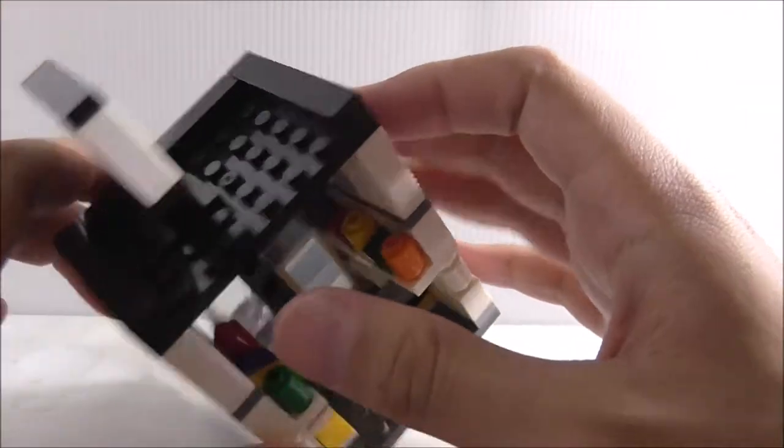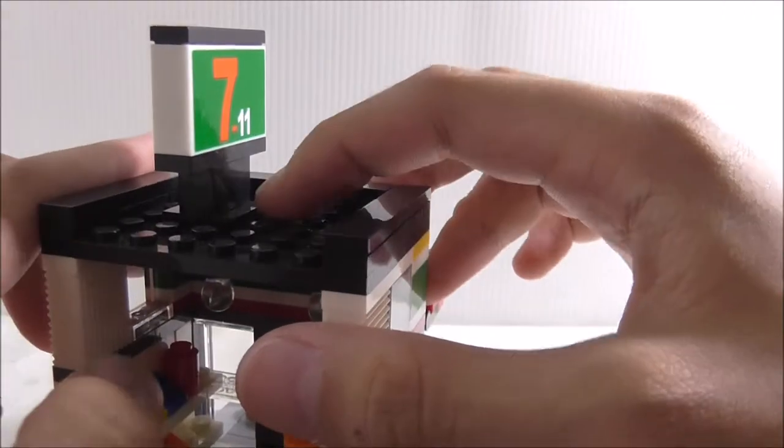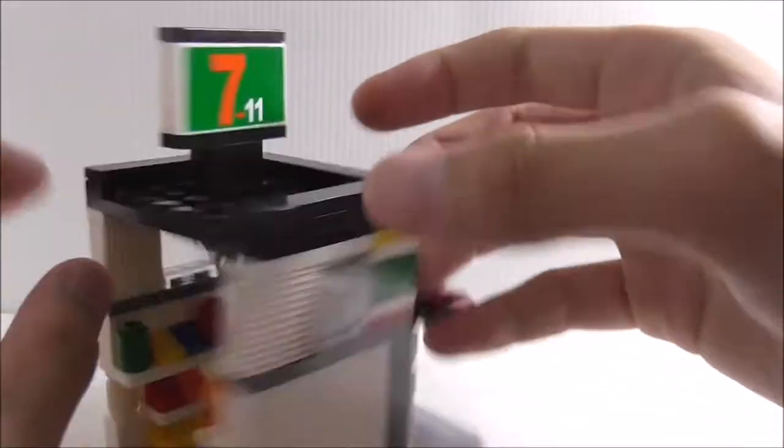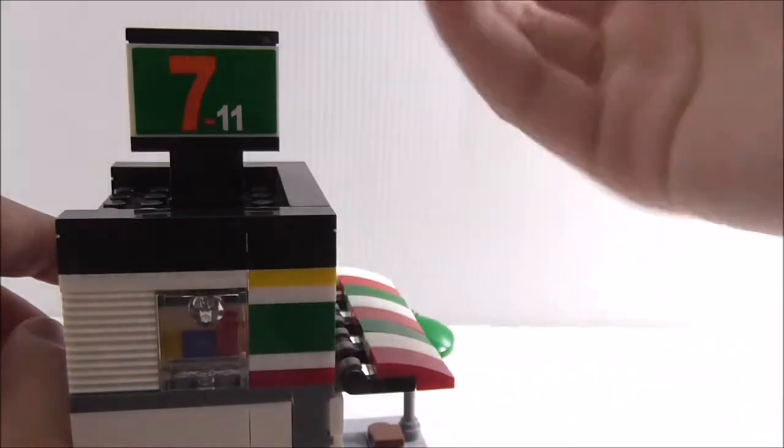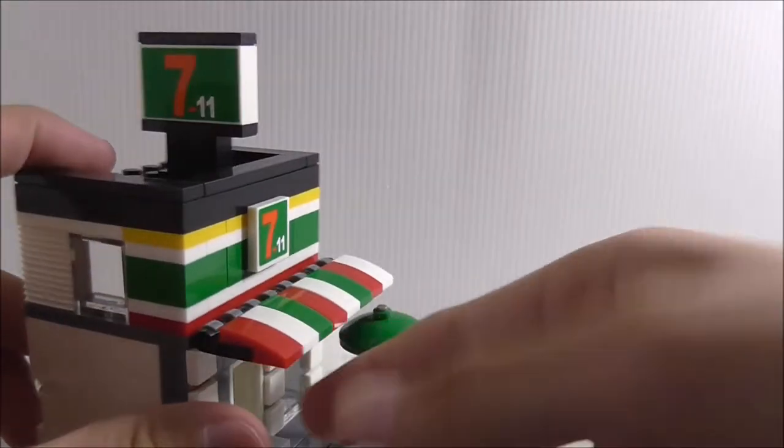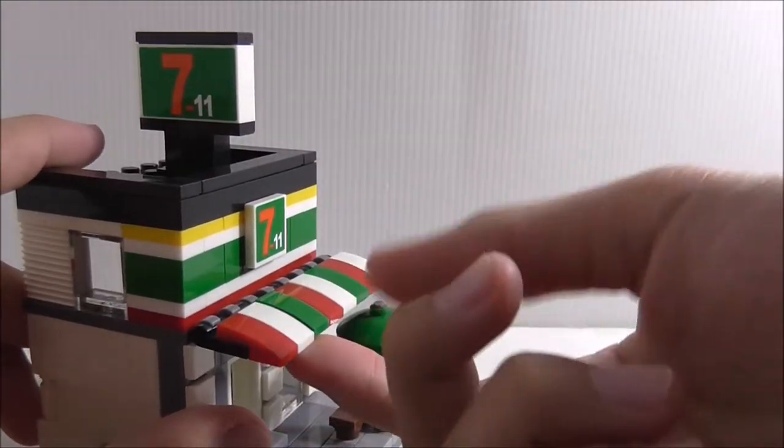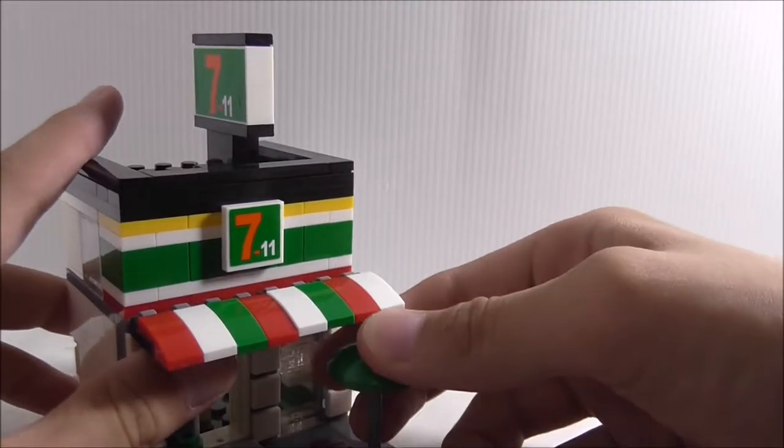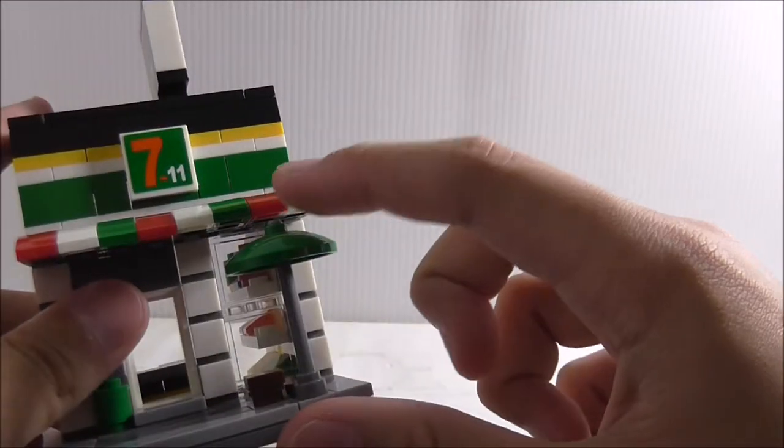On top here, for some reason this big sign is not in the middle, but you got this really big 7-11 sticker. All these decorations are just stickers. You got this thing which covers up the outside, I guess to block sunlight.